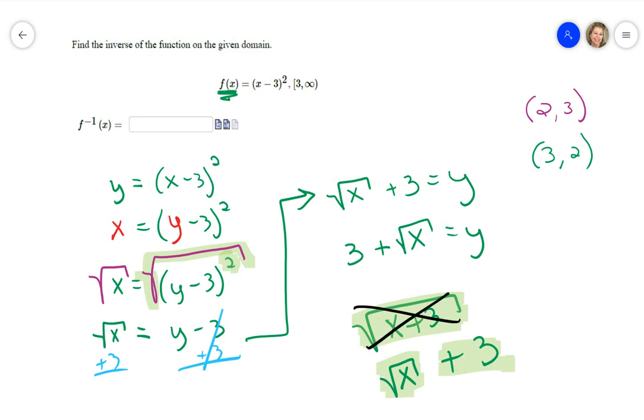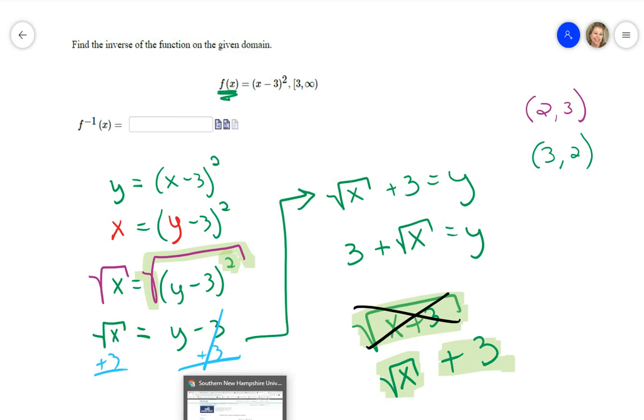So I'm going to jump back to Mobius and I'm going to plug that answer in. And then they replace the Y with f to the negative first of X, which is just symbolism for inverse. Oh, and this one, yay, they've given me the little equation editor thing, so I'm going to click on that.